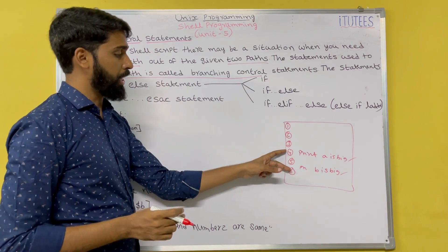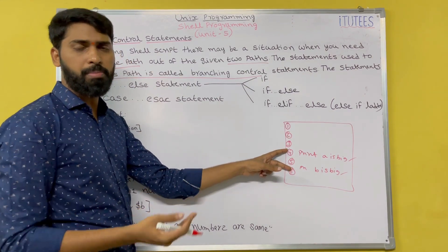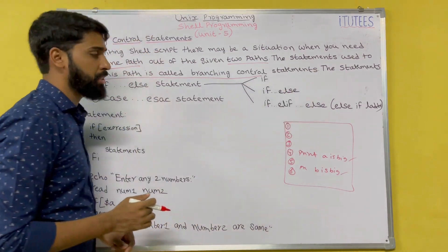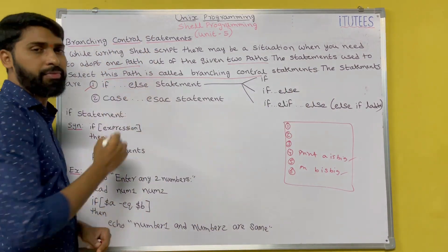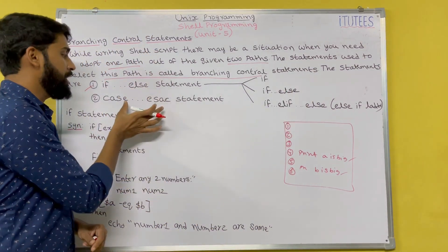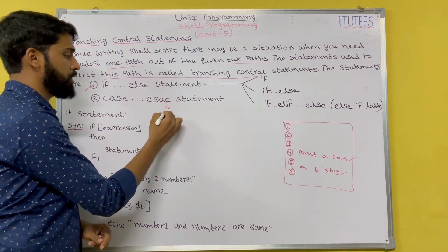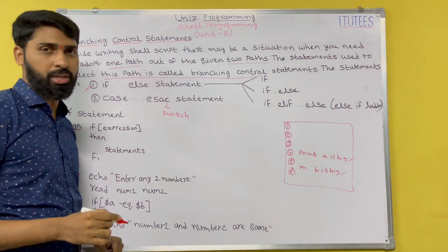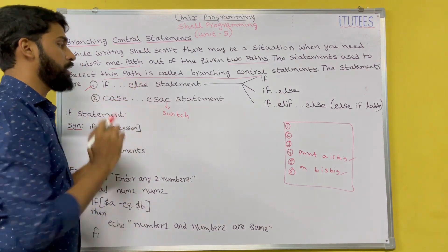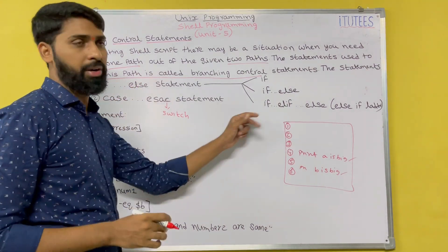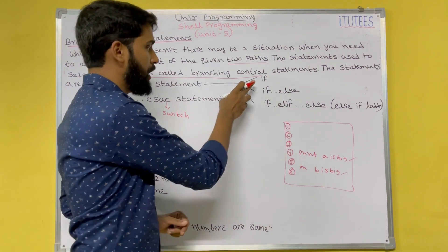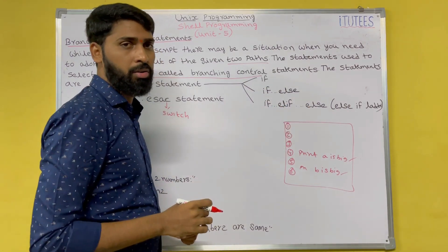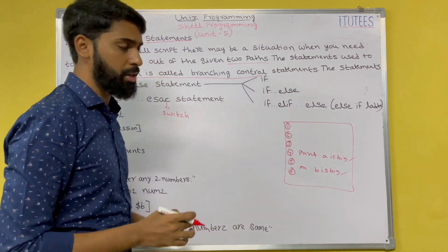How can we select these statements? Based on some branching statements. These statements are: one is if-else, and another one is case — which is similar to switch case in C language. Within the if statement, we have different types: if, if-else, and if-else-if ladder. We will discuss them one by one.